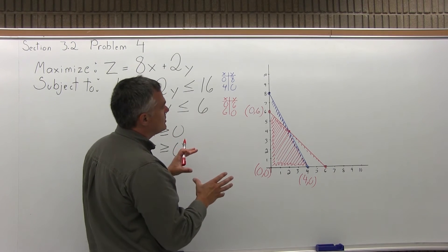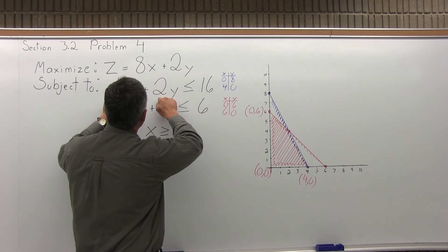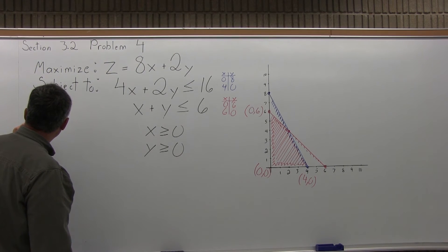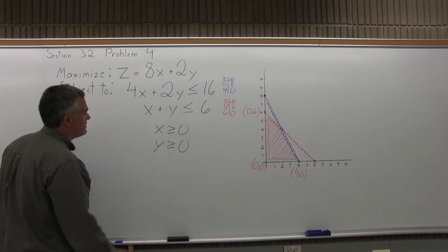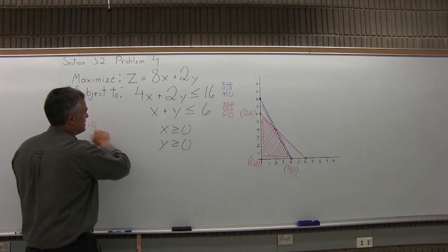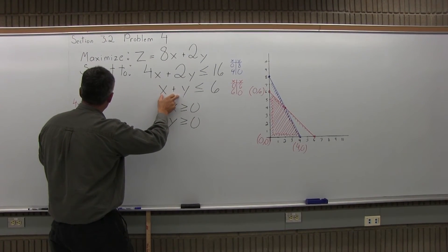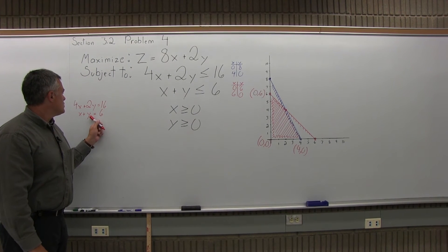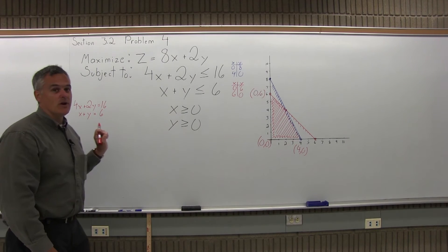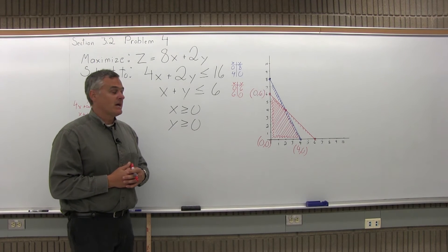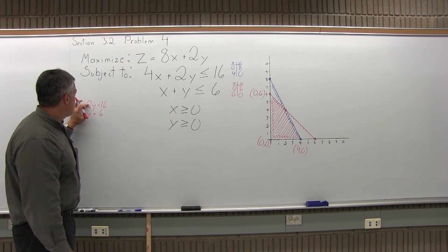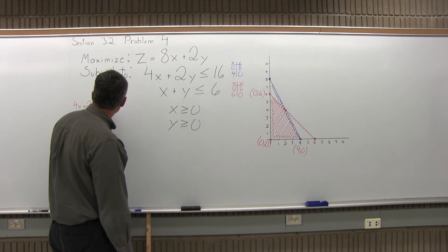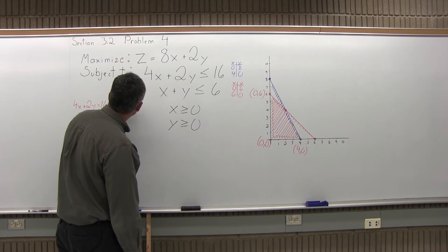So the way you're supposed to do it is take the two inequalities that are intersecting and solve them simultaneously. Take the inequality 4x plus 2y equals 16 — make it an equation, don't keep it as an inequality. And the other one that's intersecting is x plus y equals 6. There is a process from Chapter 2, Section 2.1, that shows how to solve simultaneous equations. We want to choose one variable and make the number in front the same but with opposite signs.